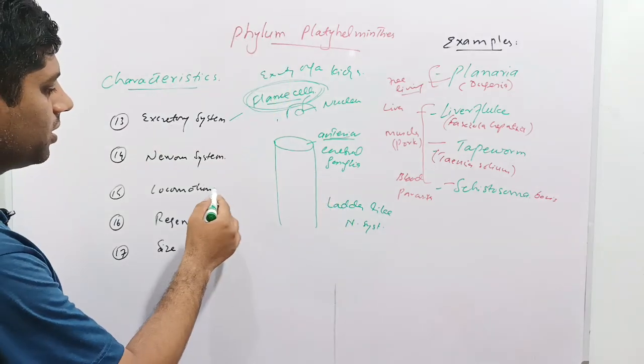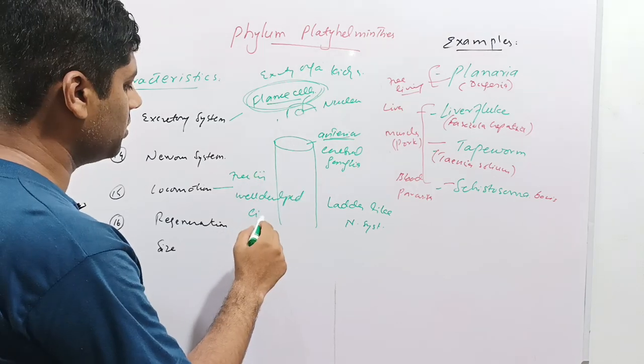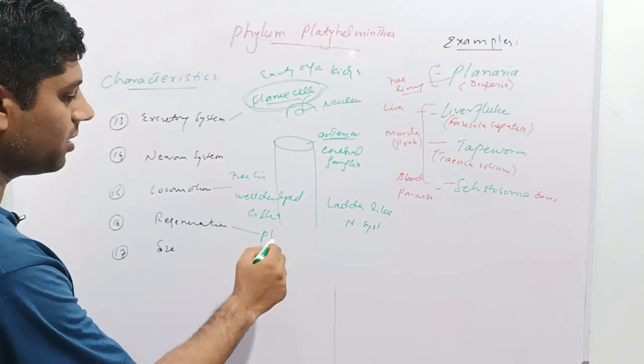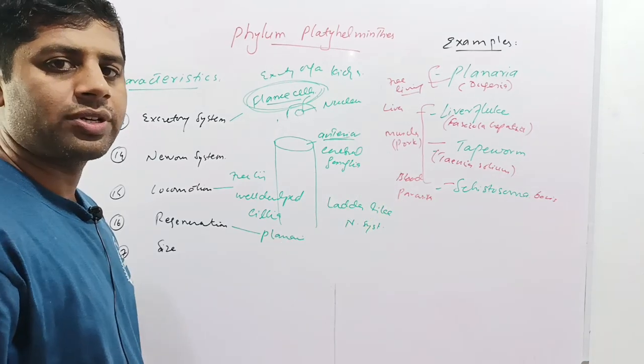Next is locomotion. In free-living forms like planaria, it occurs due to cilia. Regeneration is also present in planaria, while the rest of the parasites lack the process of regeneration.